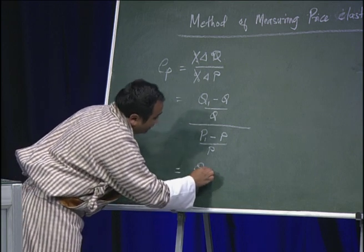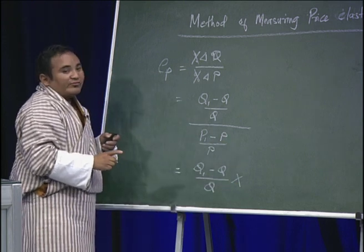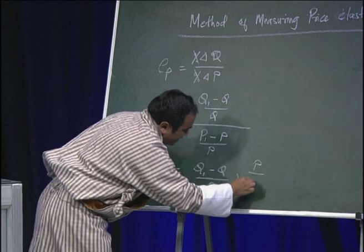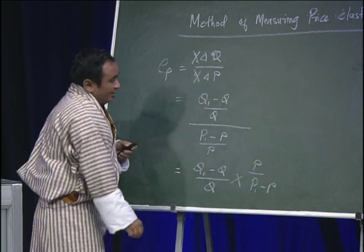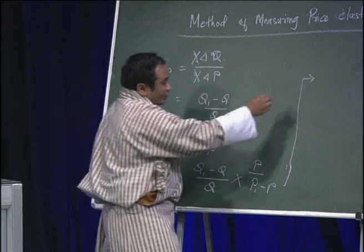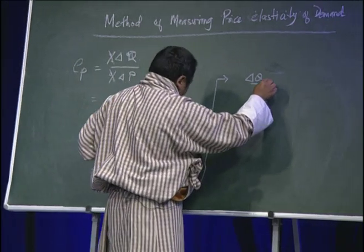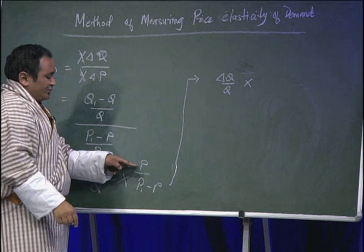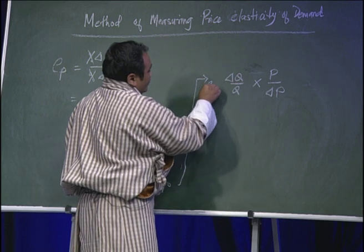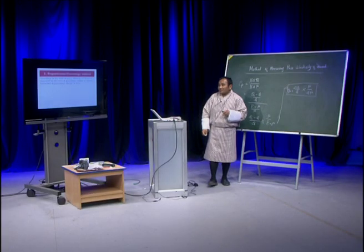So we have Q1 minus Q divided by Q. In division of a fraction, you can reciprocal the denominator, giving P divided by P1 minus P. Simplifying further, it becomes: change in quantity divided by initial quantity, multiplied by initial price divided by change in price. This is the formula to calculate price elasticity of demand using the percentage method.